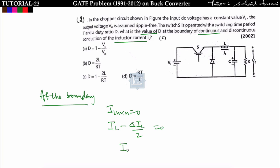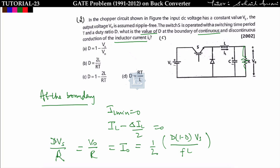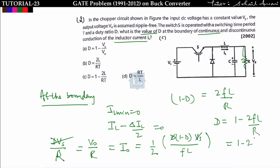At the boundary, i_L_min equals zero, which means i_L minus ΔiL/2 equals zero. i_L average can be replaced by i_naught, and ΔiL can be replaced by D(1−D)·V_s/(fL). i_naught equals V_naught/R, and V_naught equals D·V_s. Substituting and simplifying, we get (1−D) = 2fL/R, so D = 1 − 2fL/R. Since 1/f = T, this becomes D = 1 − 2L/(RT). Option C is correct.